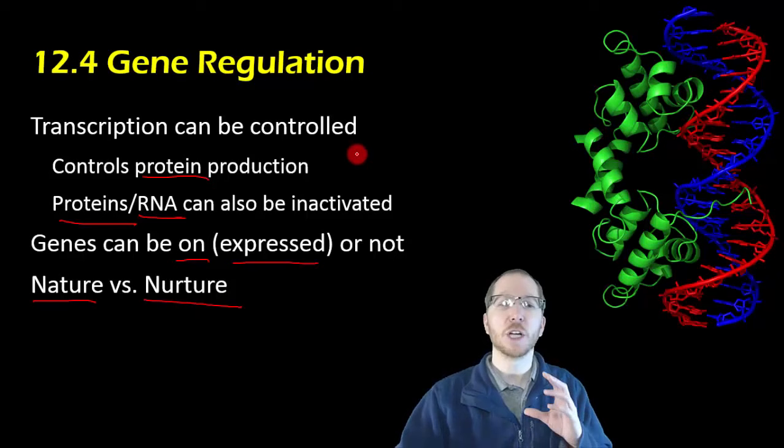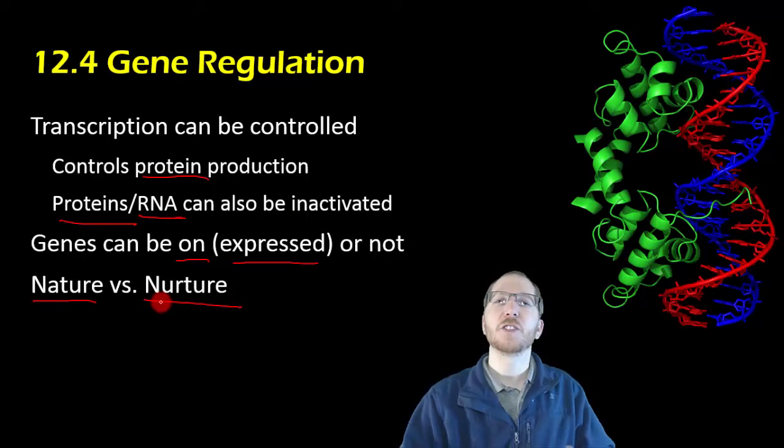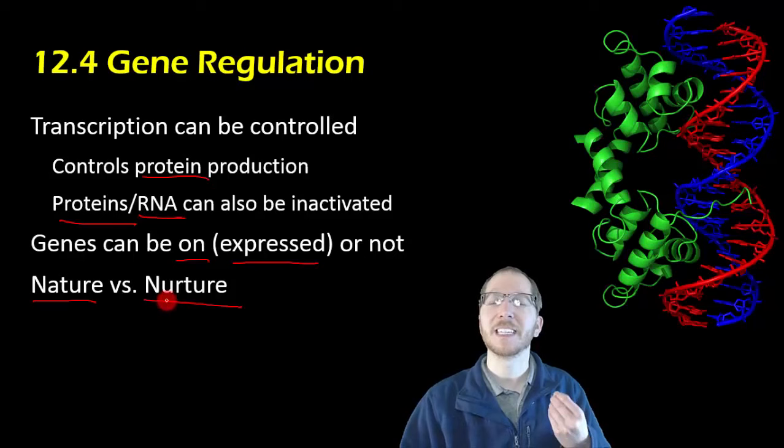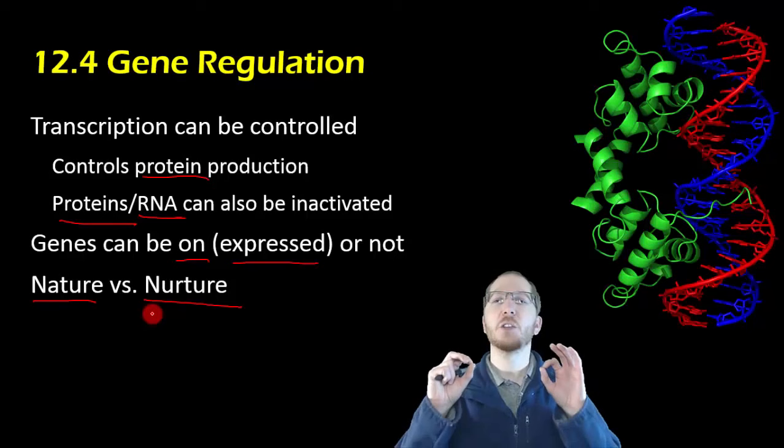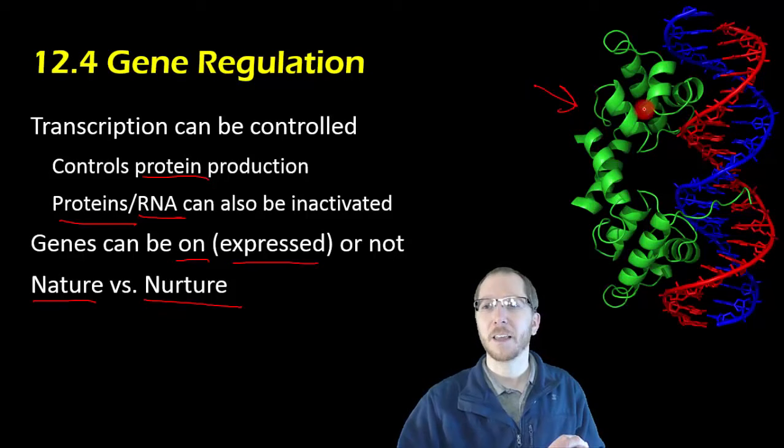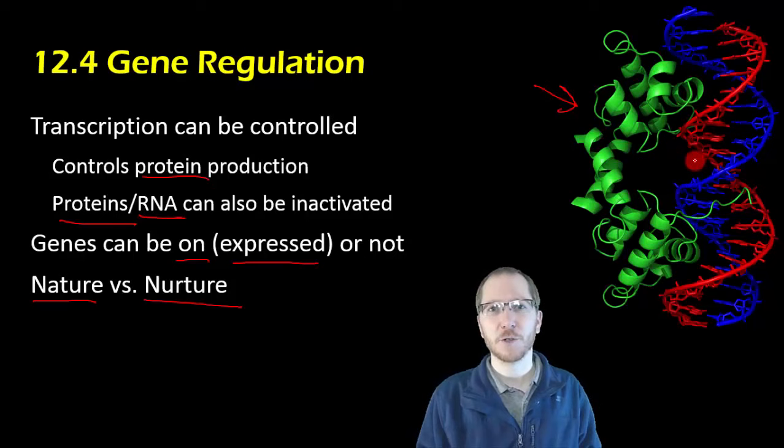And so that's why this nurture idea, the environmental idea in nature versus nurture is so interesting because it's not so much that those are in some way affecting what genes you have, they're affecting the way in which you use the genes that you have because it is possible to effectively block the DNA to prevent things like RNA polymerase from attaching, which can prevent transcription. You can also remove those proteins, which allows for transcription, to allow for the production of the protein it makes.